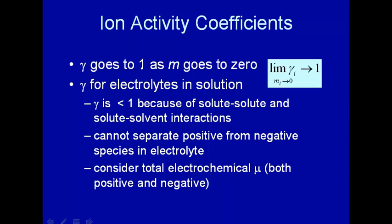The activity coefficient goes to 1 as the molal concentration, or any concentration, goes to 0. The reason why you have non-ideal behavior — in other words, why gamma is not equal to 1 — is that you have solute-solute interactions. But as you decrease the concentration to 0, the activity coefficient will go to 1 and become ideal because you have just one solute.